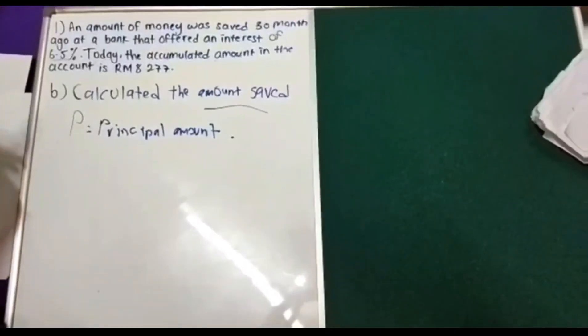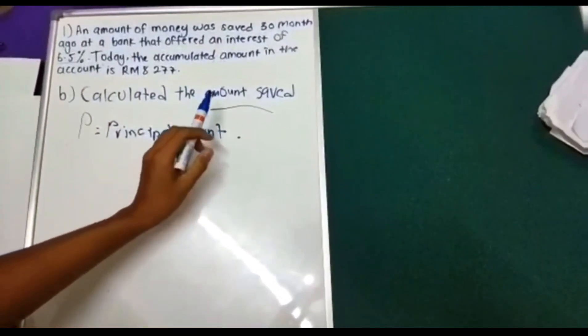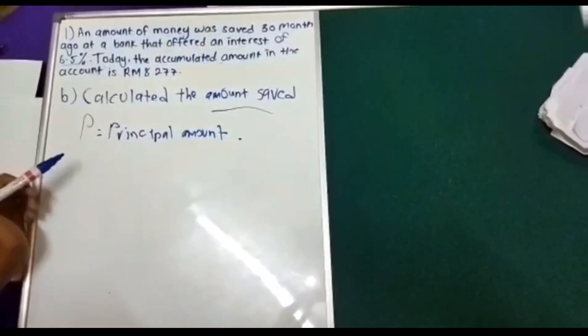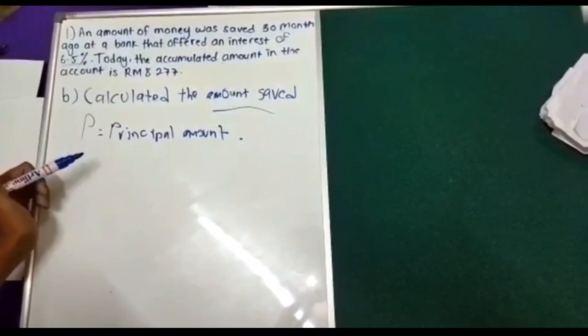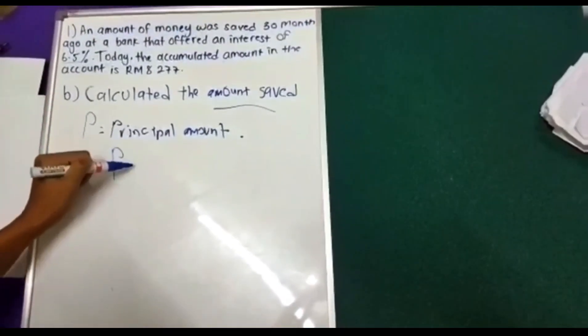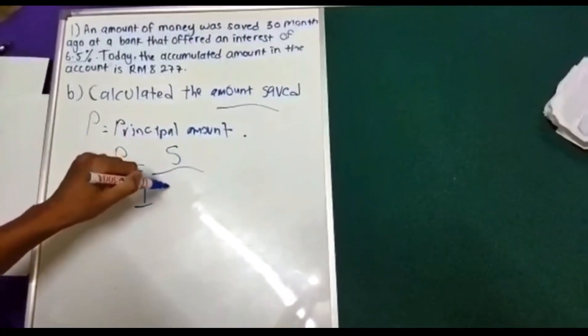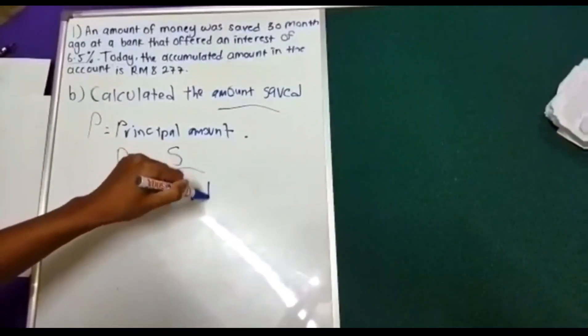Okay, next question is B. Calculate the amount saved. So, if you want to find the amount saved, we have to use the formula of P, principal amount. The formula is P equals S divided by 1 plus RT.